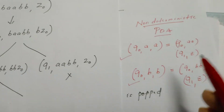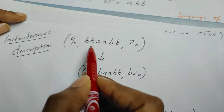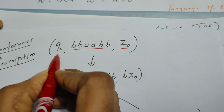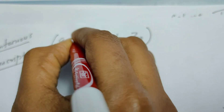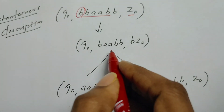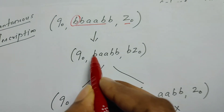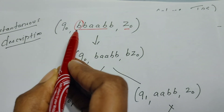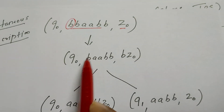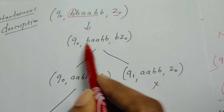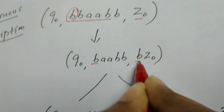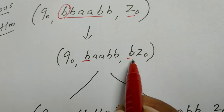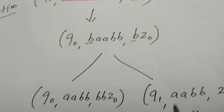Now let us see the instantaneous description. Imagine the string is kept in the input tape, the stack is empty, and the current state is Q0. From Q0 it reads B and the top of the stack is Z0, so the PDA pushes the symbol it read onto the stack — B is pushed. At the next instant the situation is Q0, B, B: from state Q0 it reads B and the top of the stack is also B. Now the PDA has two choices — let us explore both.